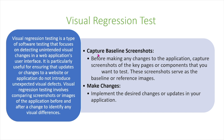In visual regression testing, the first thing we do is we capture baseline screenshots. Before making any changes to the application, you capture screenshots of the key pages or components that you want to test. These screenshots serve as the baseline or reference images. And then you make your changes and implement the desired changes or updates to your application.